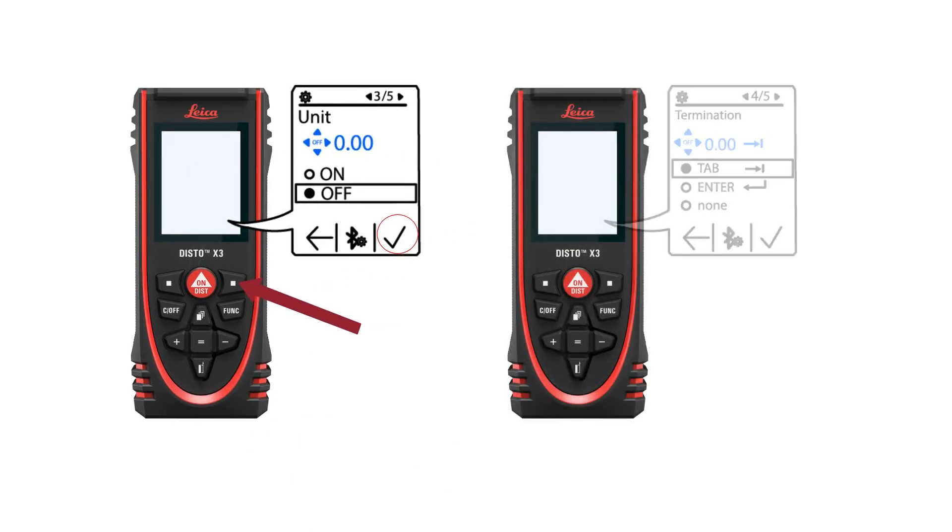The next screen is the termination settings. The FSS Window Pro app requires that you set this to the tab setting, then press the right selection key for the checkmark again.